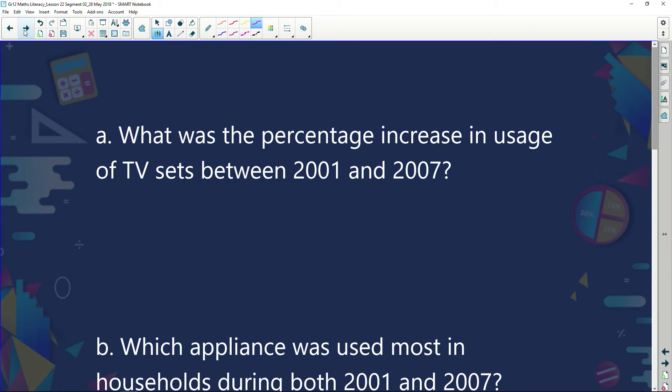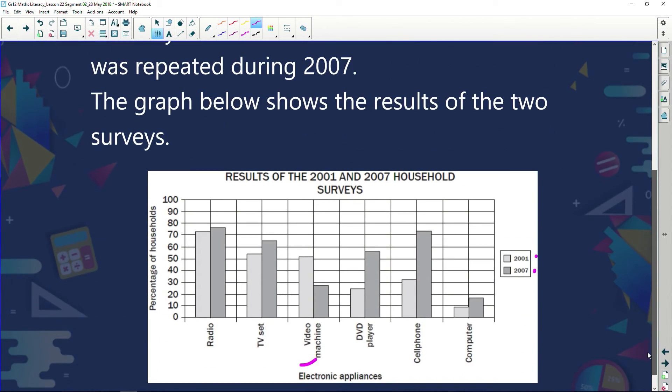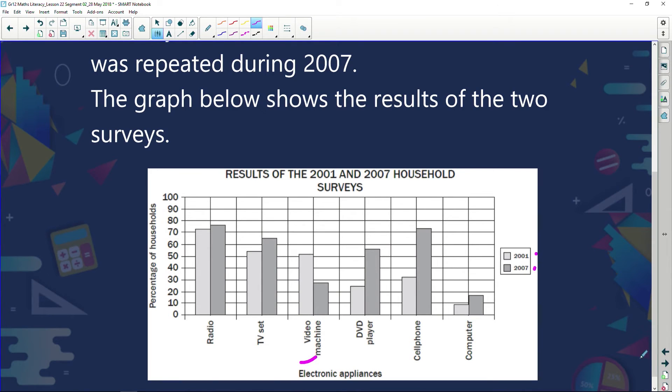What kind of questions could they ask us? First one, what was the percentage increase in usage of TV sets between the two years? So let's have a look at our TV sets. So when we look at our TV sets, we can see that in 2001, we had round about 55% of our population watching TV. Whereas in 2007, it was closer to 65%. So the difference would be 65% minus that 55%.